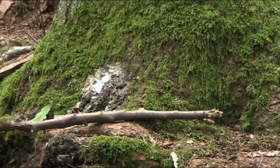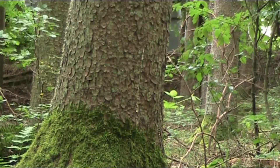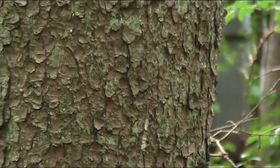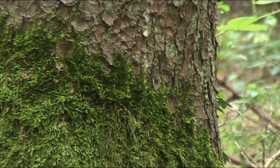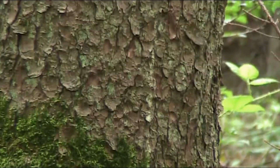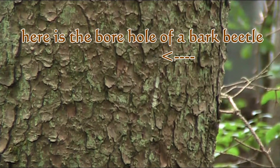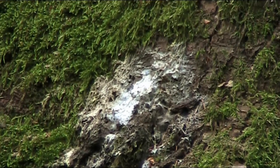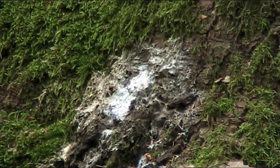Let's take another look at another tree. Here you can see the sap running down the tree from some kind of injury, frost crack, or perhaps a beetle that entered the tree and caused it to bleed out a little bit of sap.